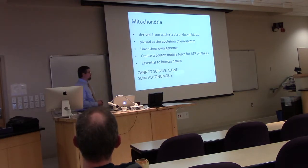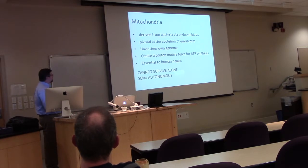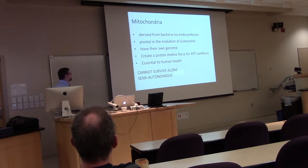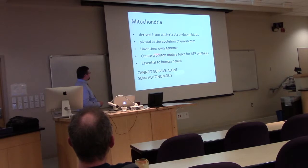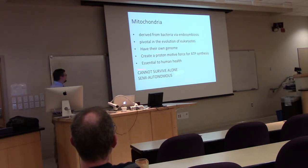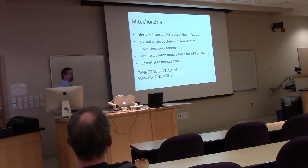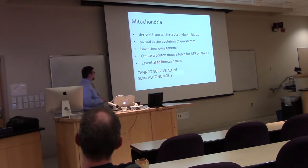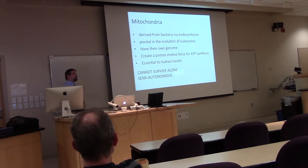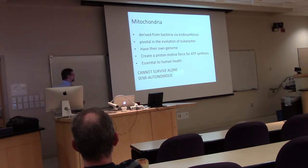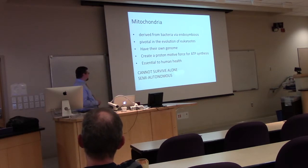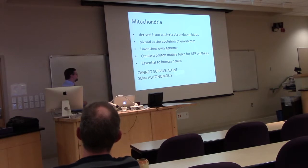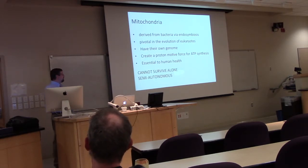To summarize the main points: mitochondria are derived from bacteria via endosymbiosis. They're pivotal in the evolution of eukaryotes. They have their own genome, create a large voltage — a proton motive force — for ATP synthesis, and are essential for human health, with many age-related diseases tied to mutations in the mitochondrial genome or nuclear-encoded mitochondrial proteins. They're only semi-autonomous: they do replicate themselves, but cannot be made de novo and cannot live outside the cell.